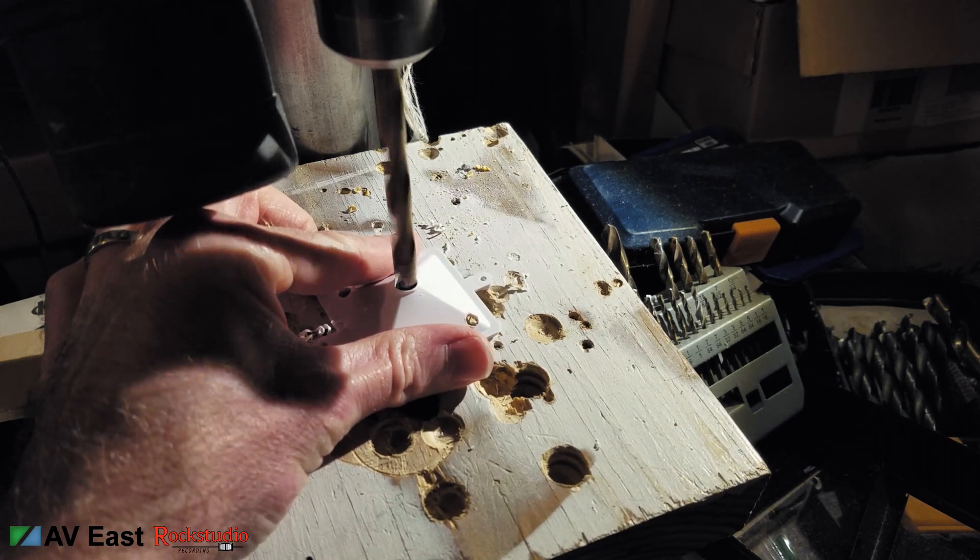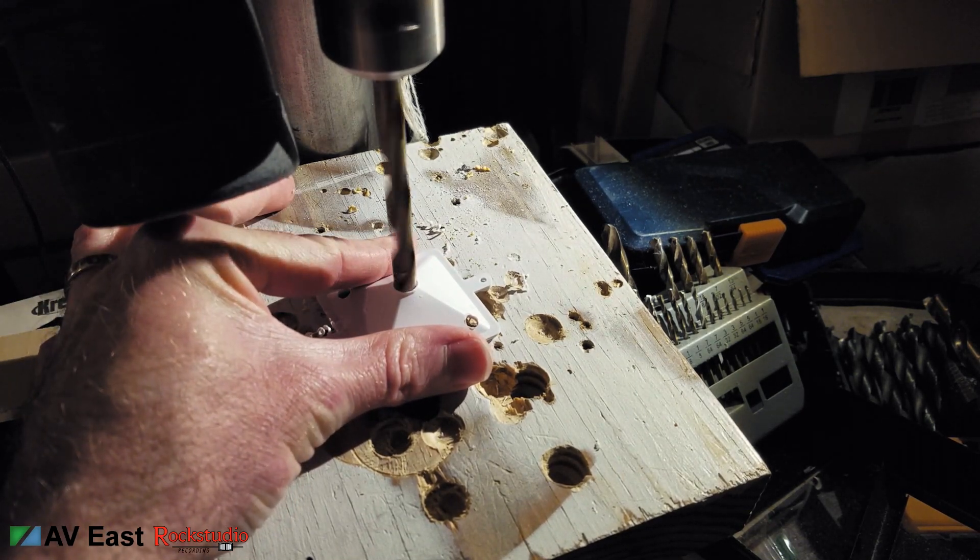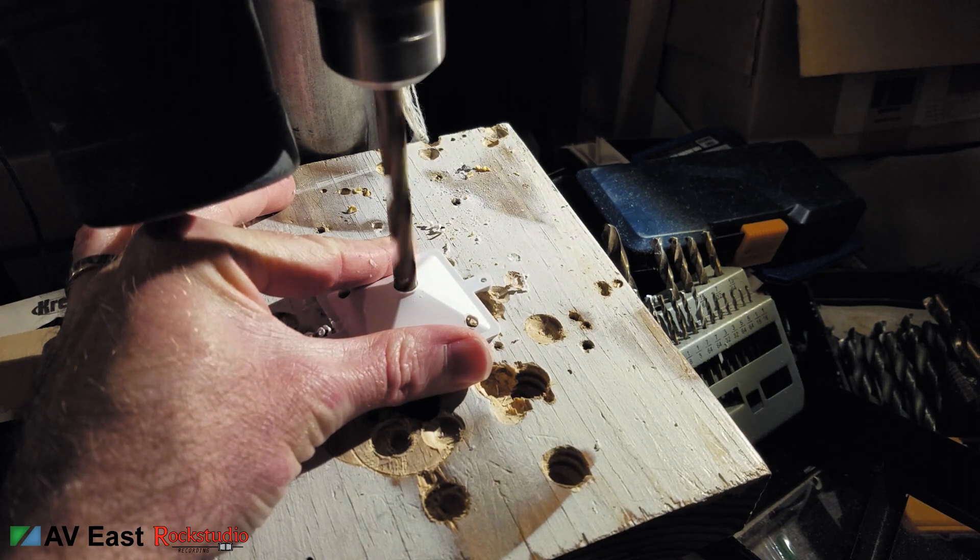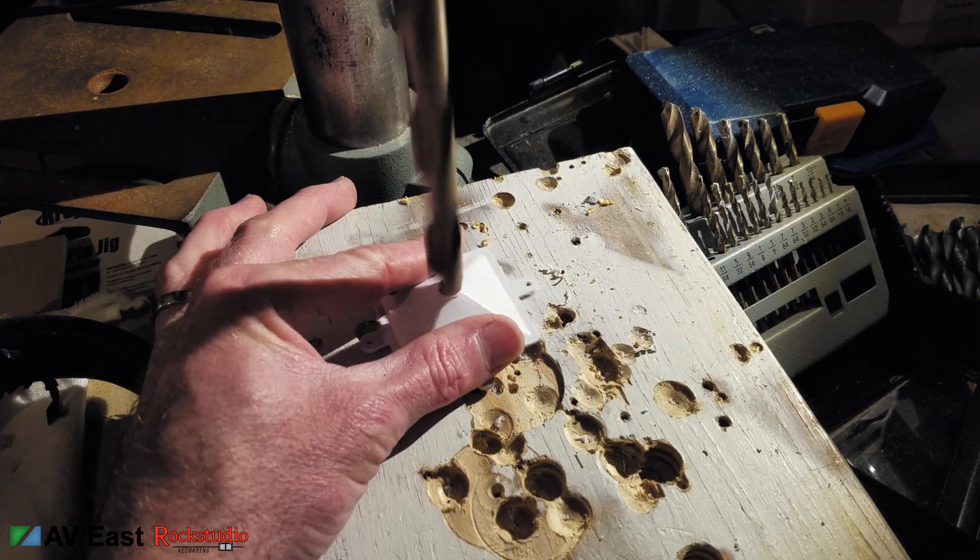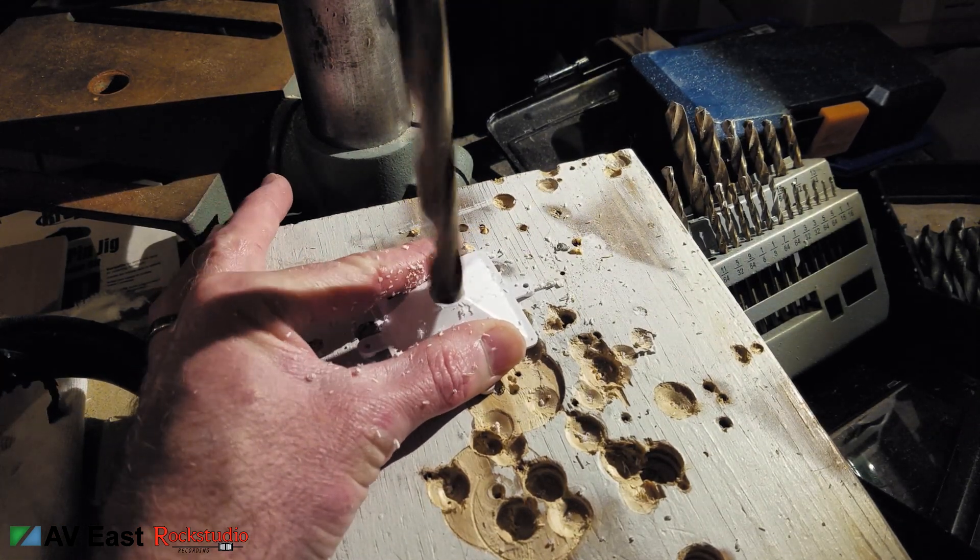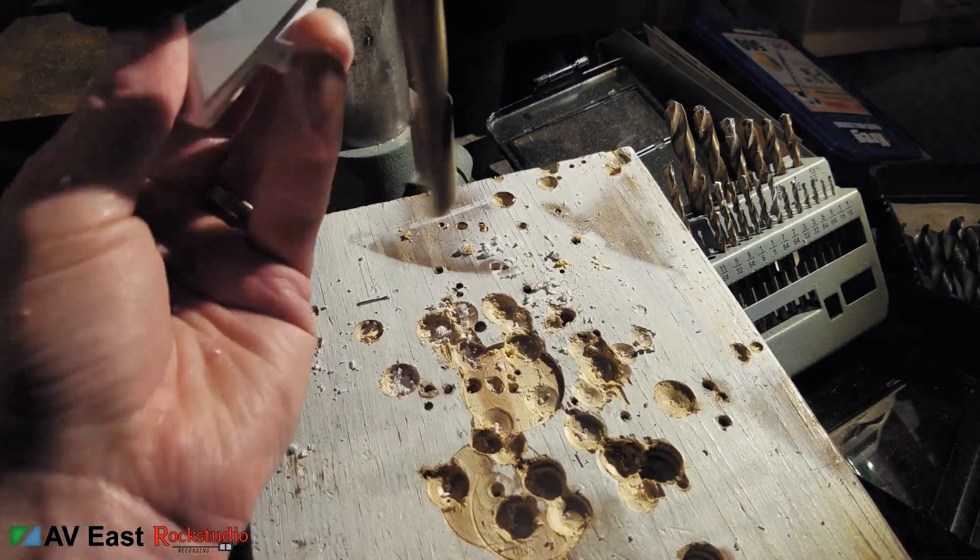For drilling plastic I always recommend pretty high speed on the drill and very little tension on the drill bit to the part. You're gonna work your way up from a smaller bit all the way to the half inch one that we need to open up the hole for the stepped bit.